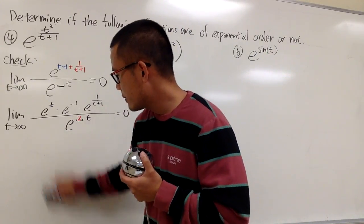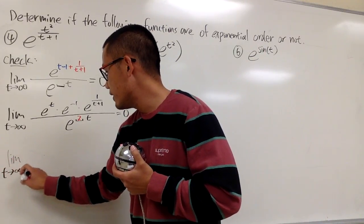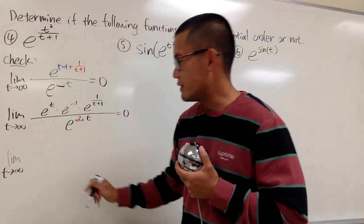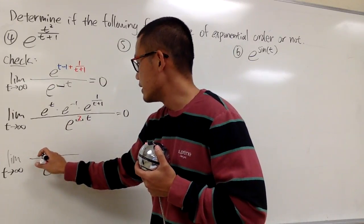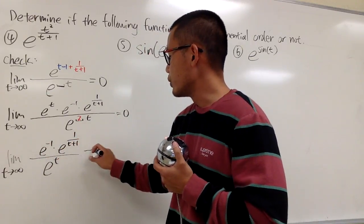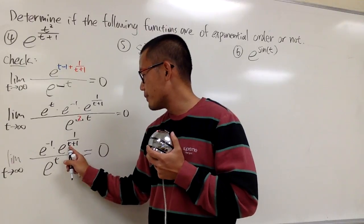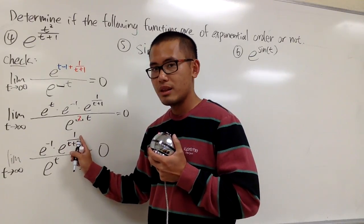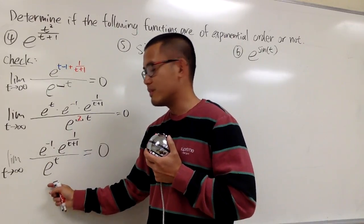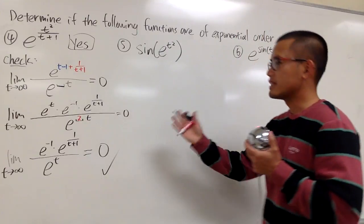Let me erase this real quick. If you take the limit as t goes to infinity, e to the t and e to the 2t cancel, leaving e to the t on the bottom. The top is just e to the negative 1 times e to the 1 over t plus 1, which is just a number, 1/e. Dividing that by infinity gives 0. Therefore, this function is of exponential order.